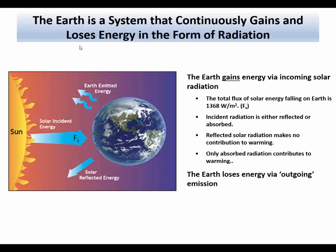But the Earth stays in energetic balance. It's receiving energy from the Sun — that portion which is absorbed — but then it also loses energy by giving off its own emission. Over time, the amount of solar energy falling on the Earth which is absorbed is equal to the energy that the Earth gives off. On the grand scale, in the long run, energy in is equal to energy out. This is called Earth's radiation budget.